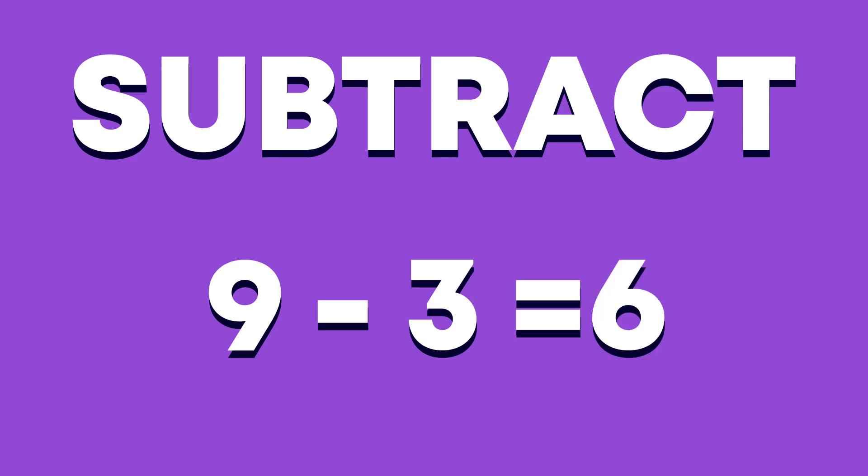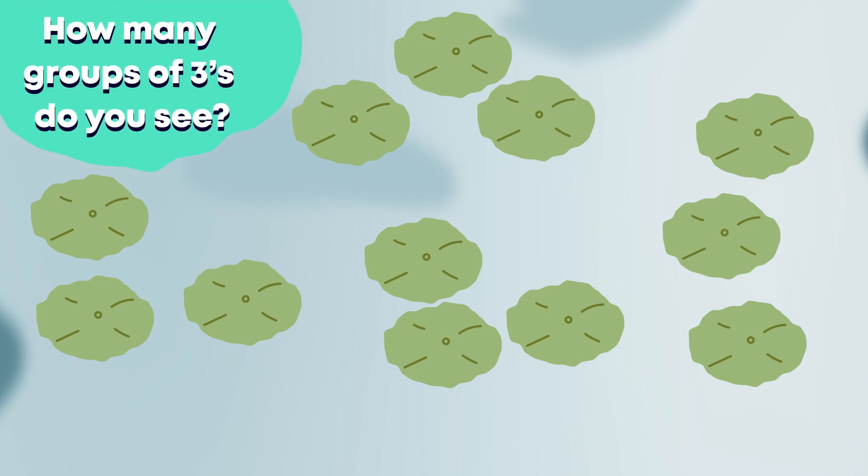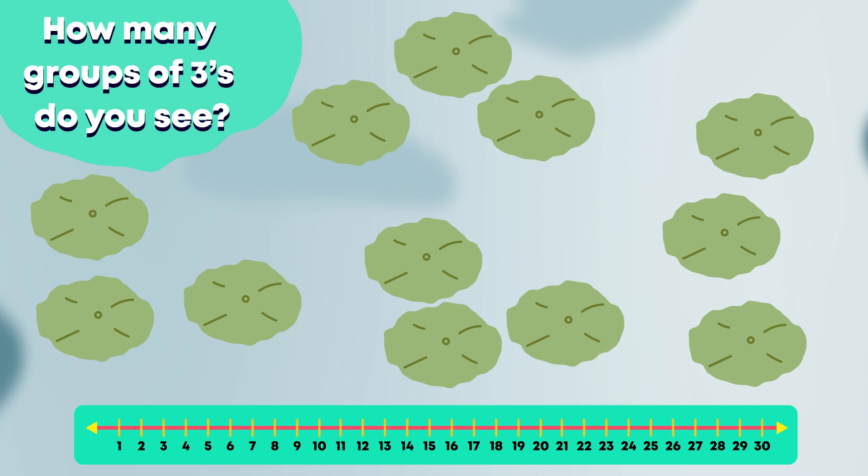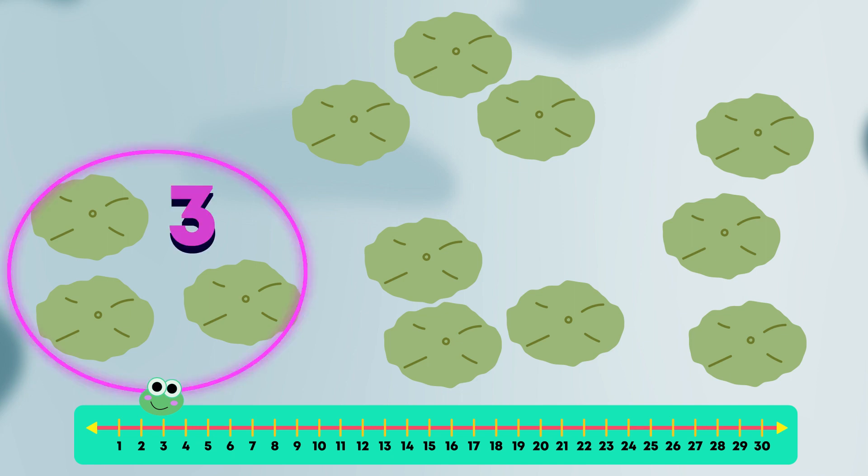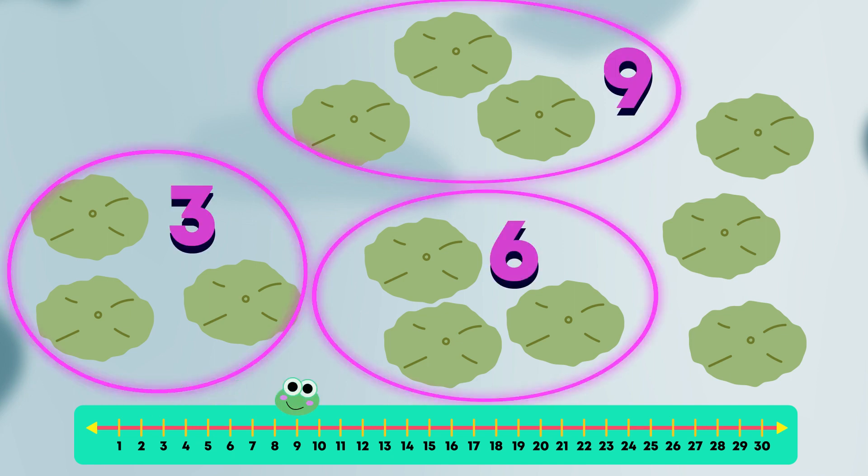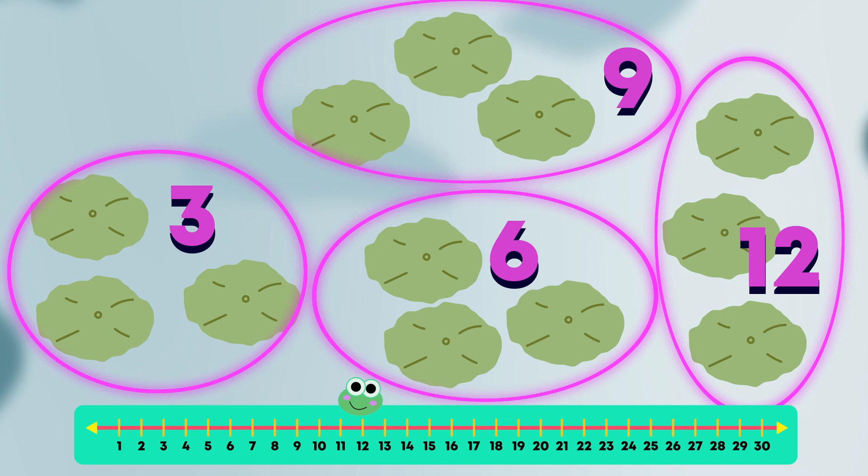This frog needs to cross the pond. Can you order the lily pads so that they are counting up in 3s? Starting with 3. The correct order is 3, 6, 9, 12. You got it right!